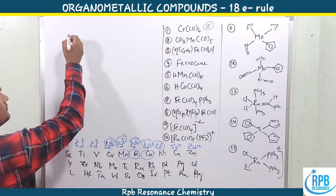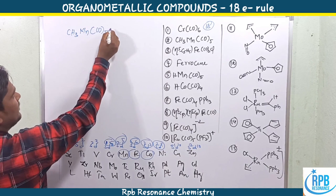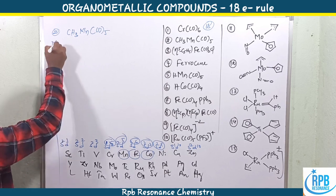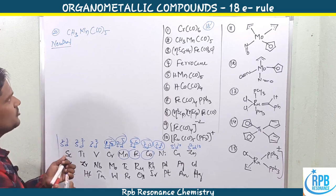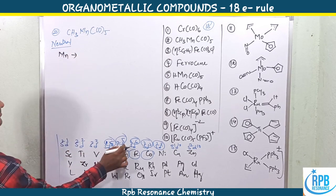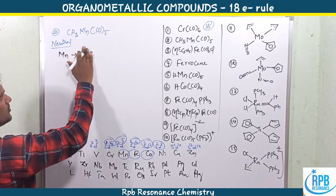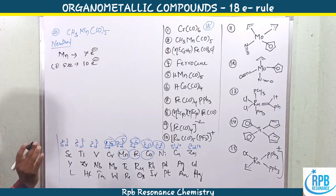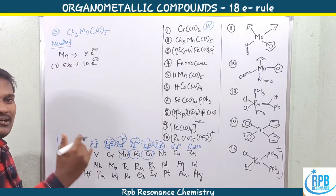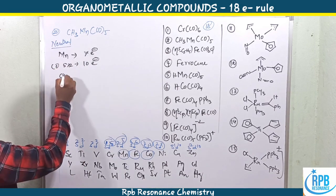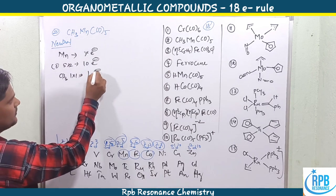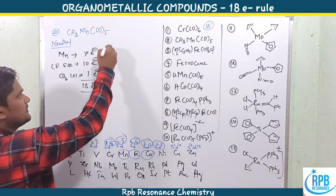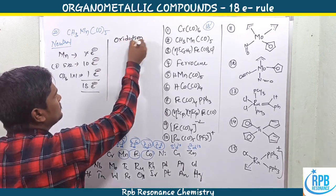The second example is CH₃Mn(CO)₅. Using the neutral method: manganese has s²d⁵ — 7 outermost electrons. Five carbonyls: 5 × 2 = 10 electrons. The methyl group (alkyl) is a 1-electron donor in the neutral method: 1 × 1 = 1 electron. Total: 7 + 10 + 1 = 18 electrons. It obeys the 18 electron rule.